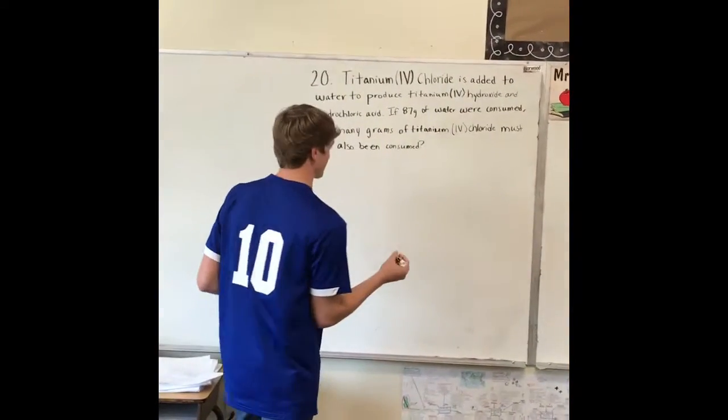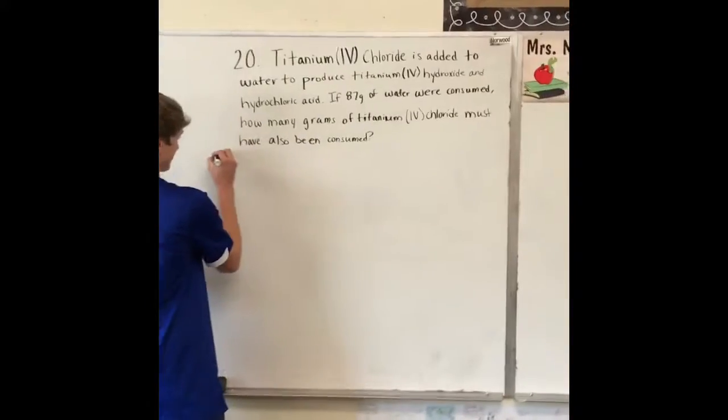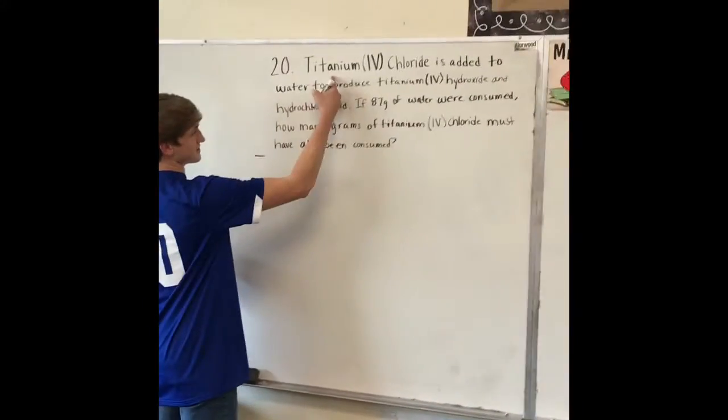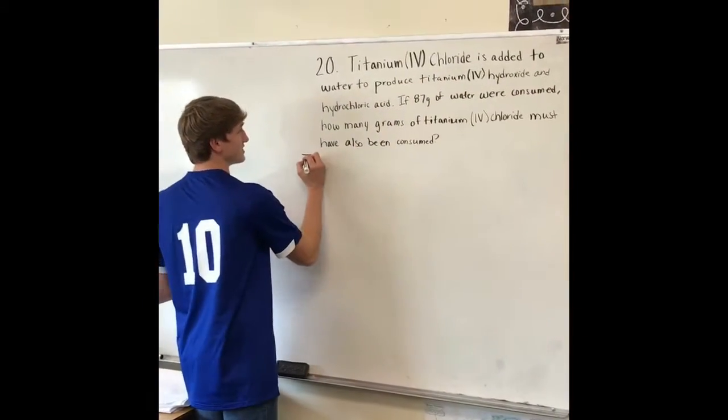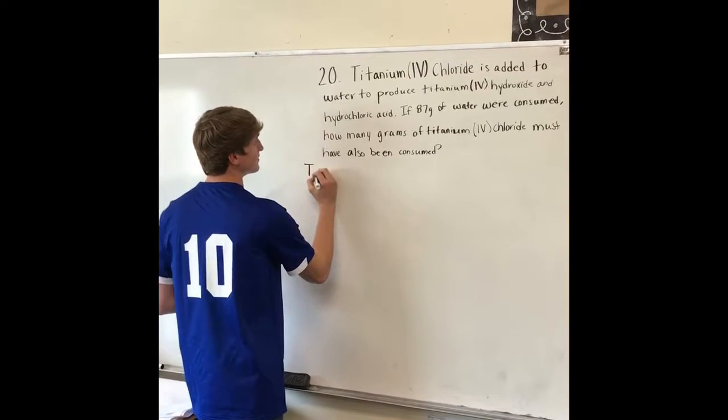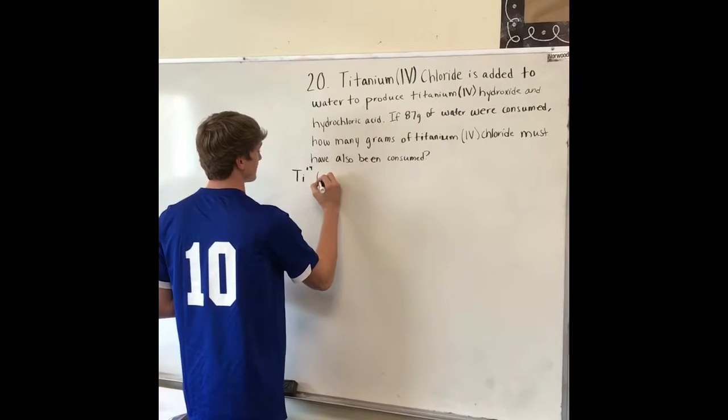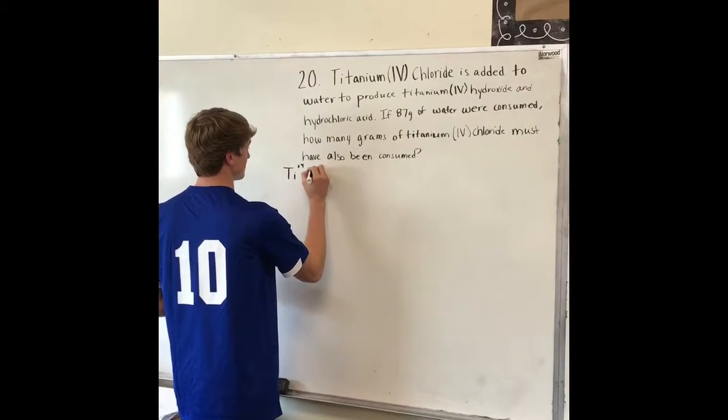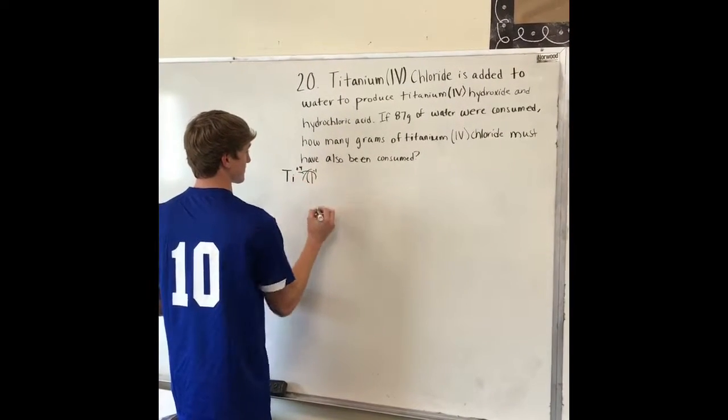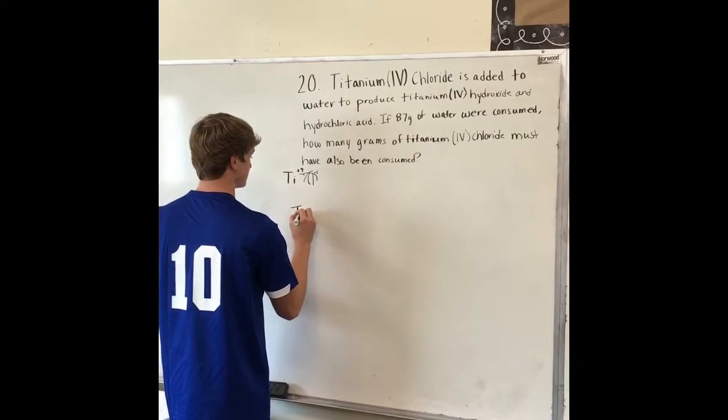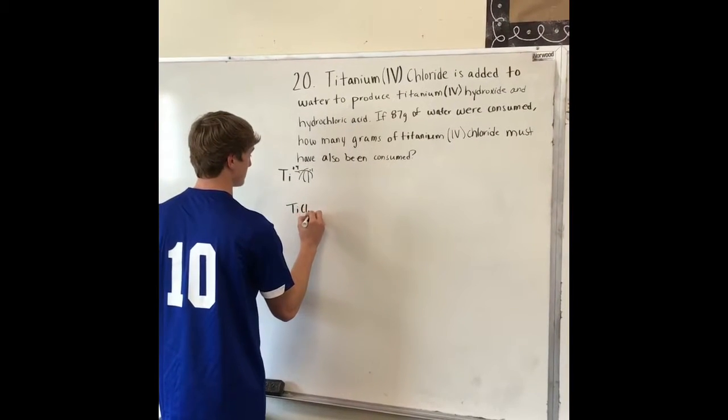First, you want to write out the skeleton equation. The first combination is titanium chloride, which has titanium with a charge of +4 and chloride with a charge of -1. You'll switch these to produce TiCl4.